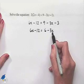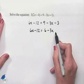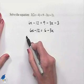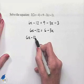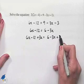Now we notice that we have a variable expression on both sides of the equation. We can end up adding 3x to both sides of the equation, and that will give us 6x minus 12 plus 3x equals 6 minus 3x plus 3x.